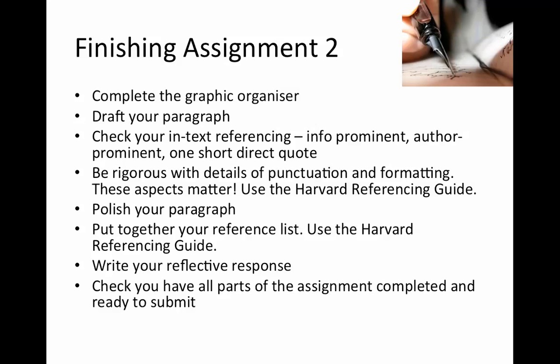You need to fulfil the assessment requirements of having one information-prominent in-text reference, one author-prominent in-text reference, and one short direct quote — so that's a minimum of three types. You will need more than three references overall, but they can't all be information-prominent, they can't all be author-prominent, and you should not have a paragraph littered with direct quotes. You might have, for example, three information-prominent references, one author-prominent, and one direct quote, or two information-prominent, two author-prominent, and one direct quote — as long as there is at least one of each.